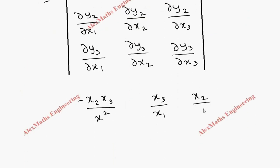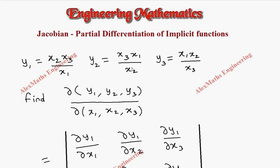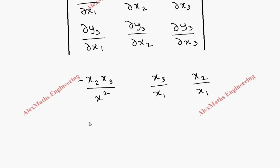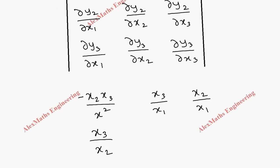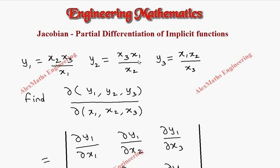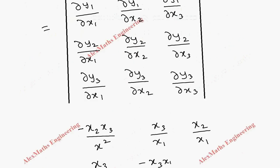Now y2 with respect to x1: x1 differentiation is 1, so we get x3/x2. Then y2 with respect to x2: differentiating 1/x2 gives minus 1/x2², and the numerator stays as it is, so we get −x3*x1/x2². Then y2 with respect to x3: x1 and x2 are constant, so we get x1/x2.